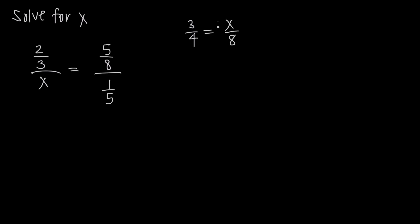When we need to solve for the variable in a proportion like this one, all we do is cross multiply. When we do 3 times 8, we get 24. When we do 4 times x, we get 4x. We set those two things equal to each other, which gets rid of the fractions and turns it into a simple equation. Then we just divide both sides by 4 and we'd see that x was equal to 6.